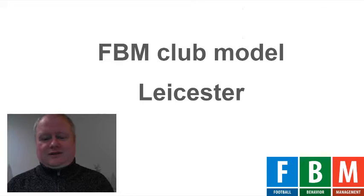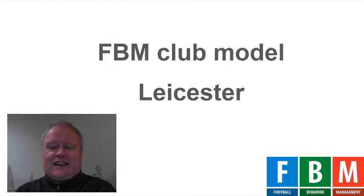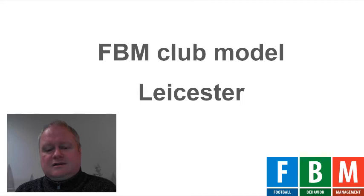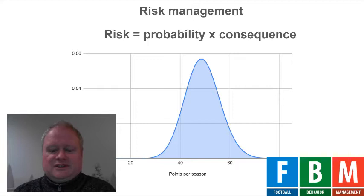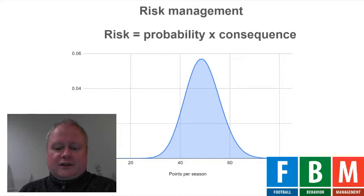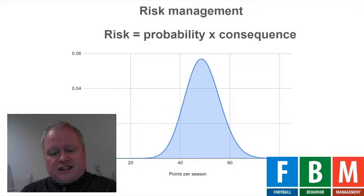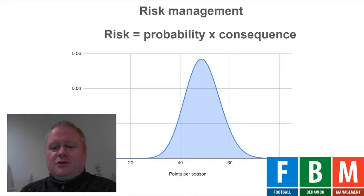We're going to use Leicester today as the example. This is a presentation I did last week for a Dutch club, which we hope will adopt the club model. I transformed it to Leicester so we can look at the kind of things they are looking at to limit risks. Based on the average points that Leicester scores in the Premier League, we can see how big the risk is of being relegated. You can see that around 35 points, this small triangle represents the probability that Leicester is going to be relegated. It's very small indeed, but the consequences would be huge, so it's still a big risk.